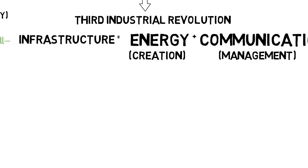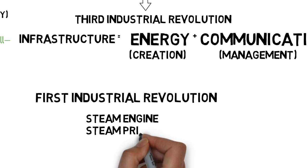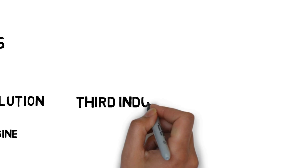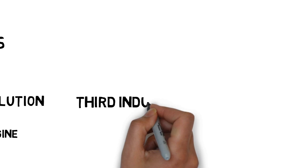During the first industrial revolution the infrastructure comprised of the steam engine, steam printing and the telegraph. Then the second industrial revolution brought with it a shift to oil, the internal combustion engine and the telephone. Now our third industrial revolution is underway. This time it's made up of the energy internet, communications internet and logistics internet.